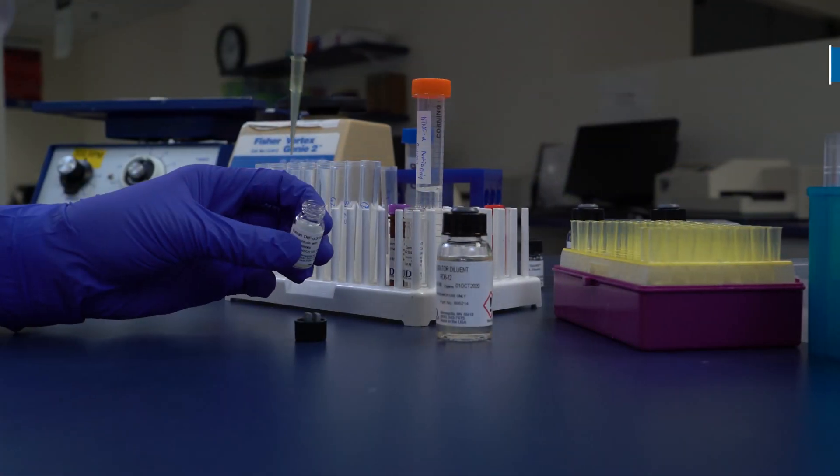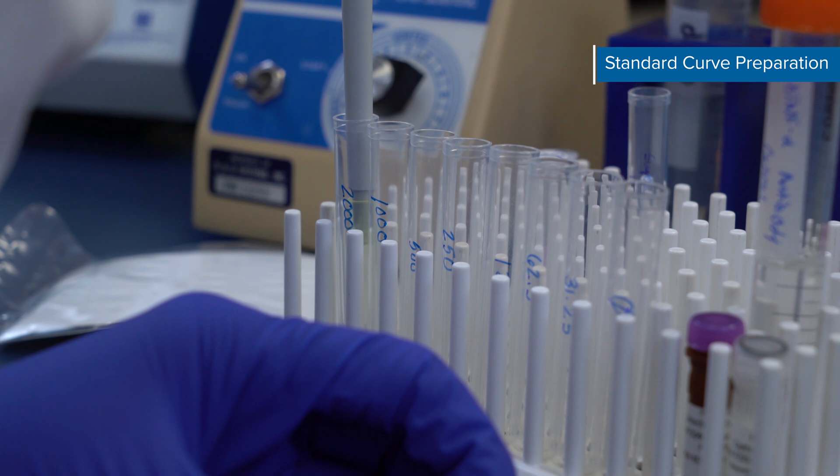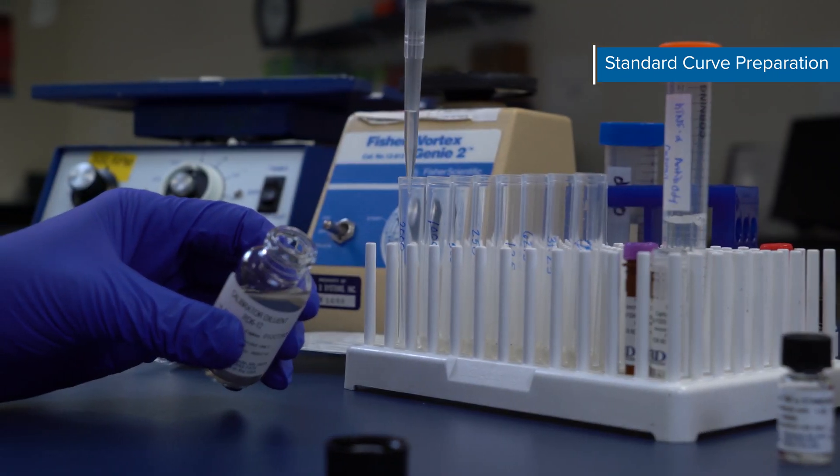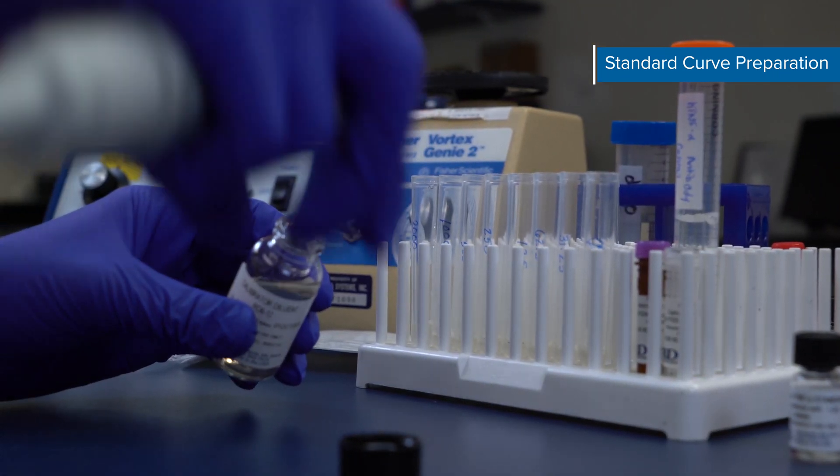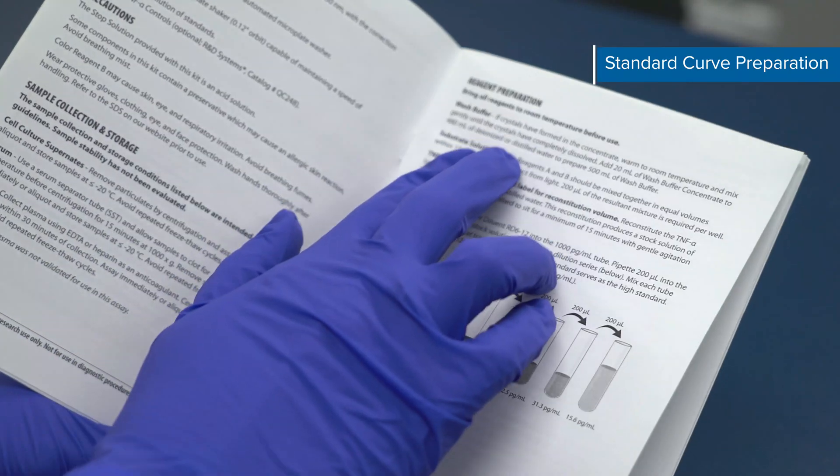It's time to create the standard curve. Pipette 50 µL of the standard into the 2000 pg per mL tube. Then add 450 µL of the calibrated diluent into the same tube. This creates the high standard. Vortex gently to mix.